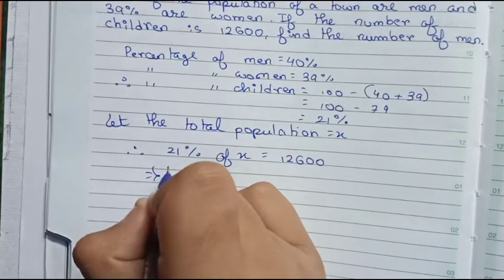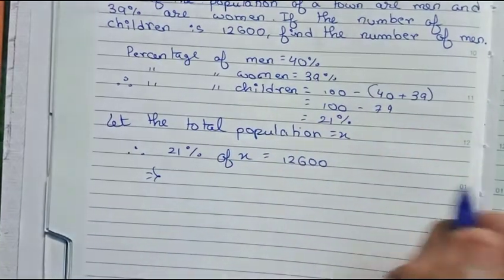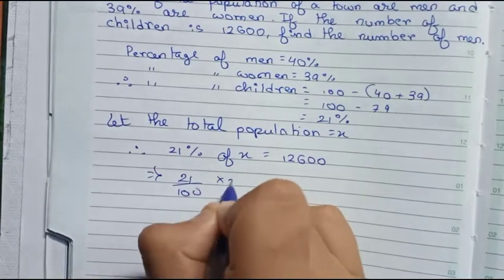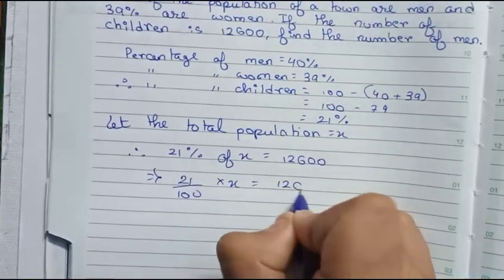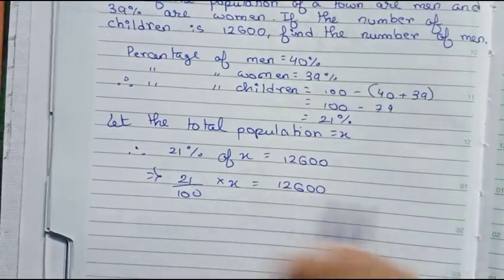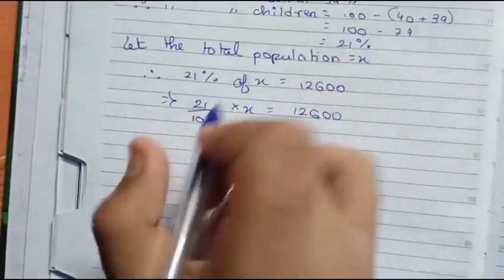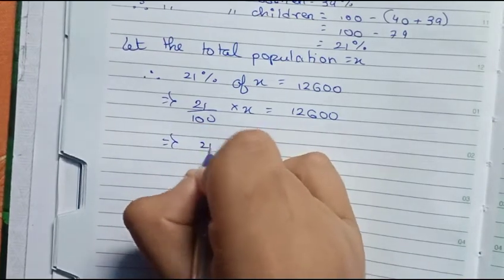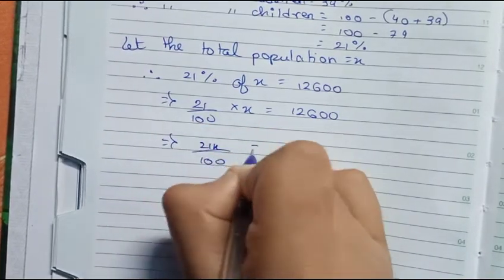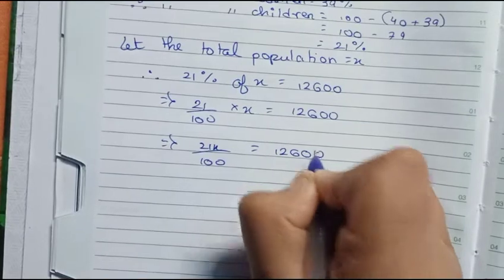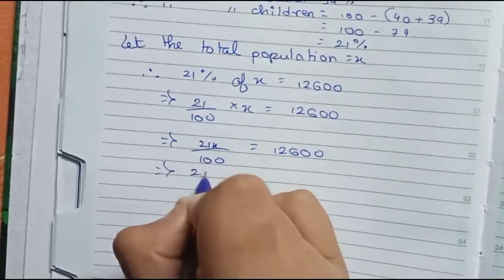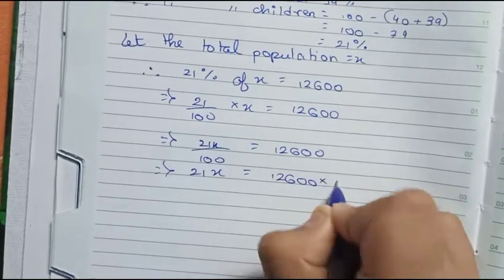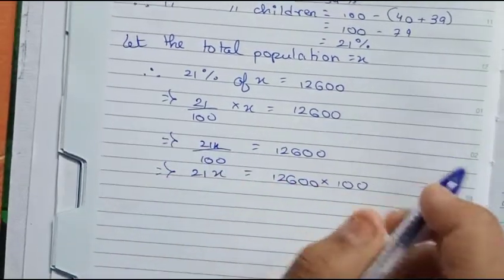21% you can write 21 by 100 into x equals to 12600. Or you can write 21x by 100 equals to 12600. Or 21x equals to 12600 into 100. We are taking 100 from left side to right side.